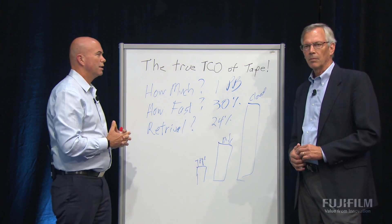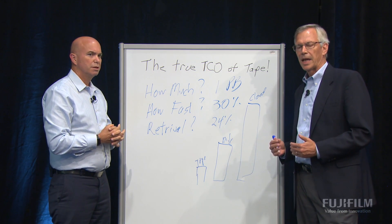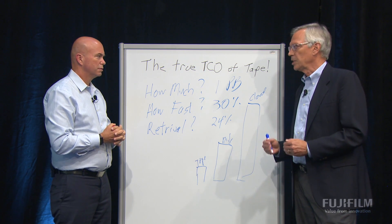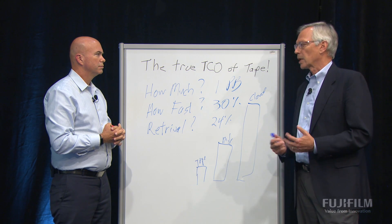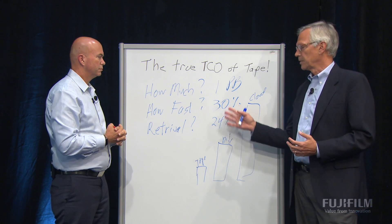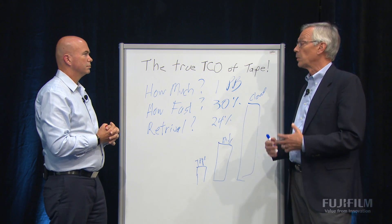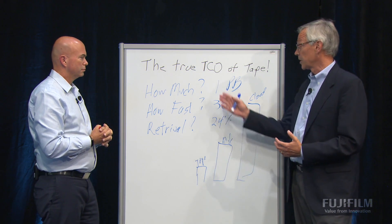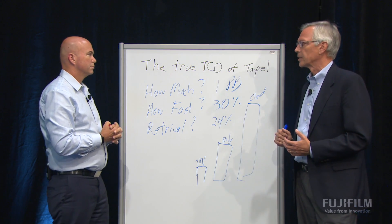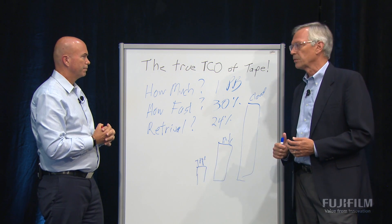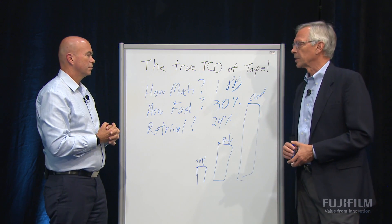Where can viewers get access to this? The tool is actually available now on the Fujifilm website. If you go in there and look for a TCO model, you can find this tool. We've added some new features for more complex environments — there's a fast and easy version, but you can now also go in and customize it. For example, what if you want to have two copies of the data? So it's not really one petabyte — you want another copy replicated somewhere else. We run an offsite version for tape, we replicate the disk, and we also double the cost associated with the cloud.